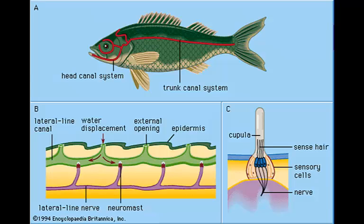Chemoreceptors are located all over the head and much of the body surface. Fish also have what's called a lateral line — a series of pores connected to canals beneath the skin that cover the head and sides of the body, which detects motion. Some fish, like electric eels, catfish, and sharks, can actually detect the electricity given off by other bodies.